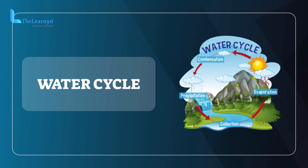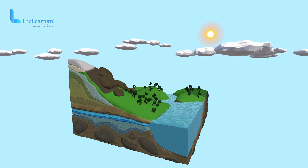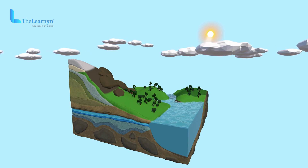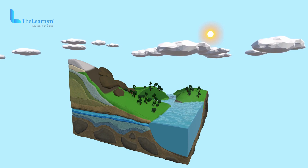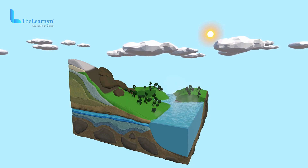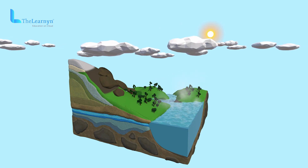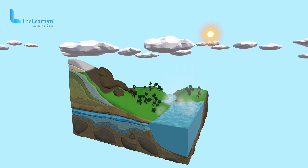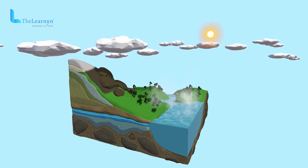The water cycle is a simple circular cycle of evaporation, condensation, and precipitation. Let's learn how rain forms. When the sun shines, the heat of the sun warms the water, turning it into an invisible gas called water vapor. This process of changing water into water vapor is called evaporation. Since gas is lighter than liquids, water vapor rises up into the sky and moves away from Earth's surface.